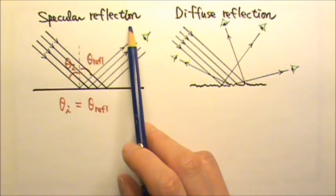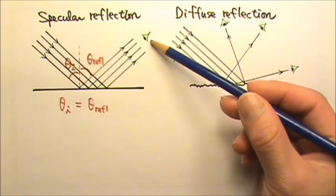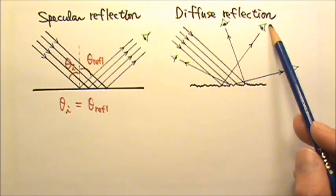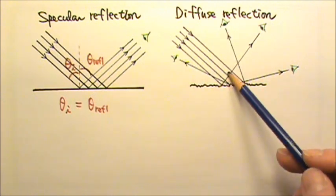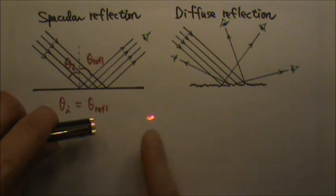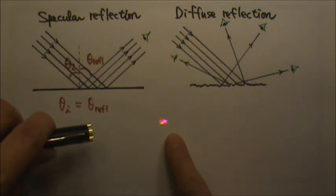For specular reflection, an observer's eye has to be at a certain angle to see the reflected rays. For diffuse reflection, reflected rays can be seen at all angles. That is why when I shine this laser beam on the paper, this red dot can be seen at all angles in front of the paper.